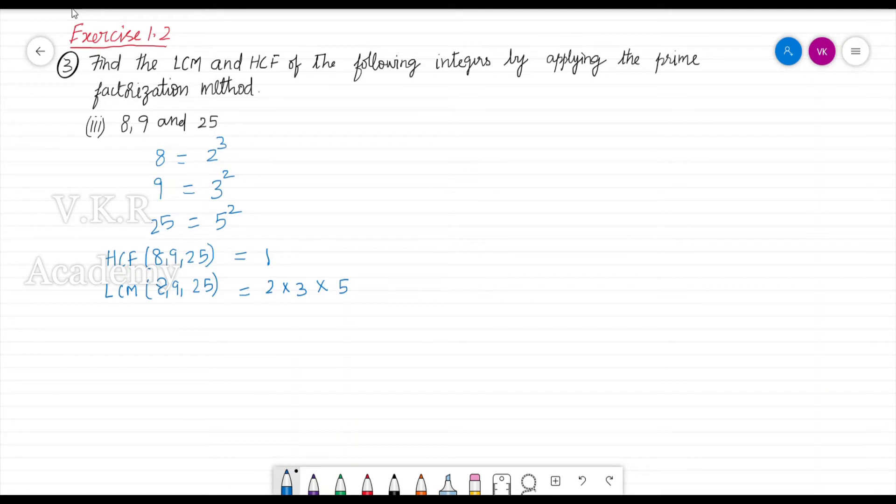And their highest powers available are 3 for 2, 2 for 3 and 2 for 5. Therefore, the LCM is going to be 2 cube into 3 squared into 5 squared.